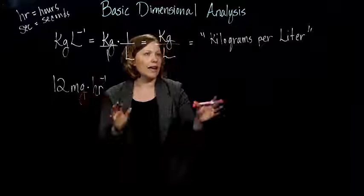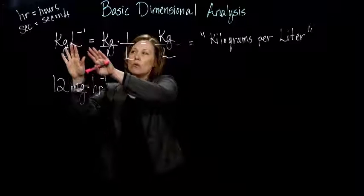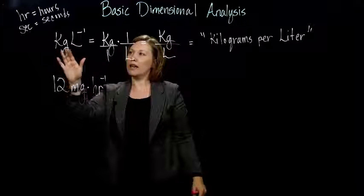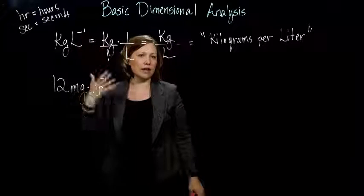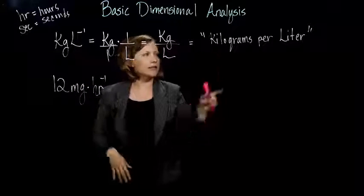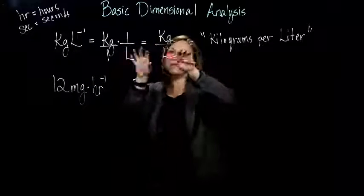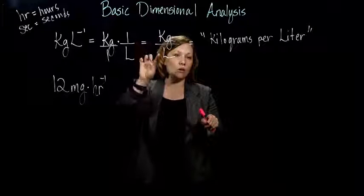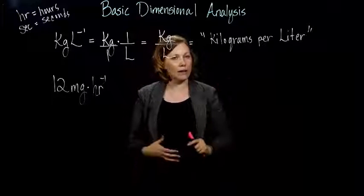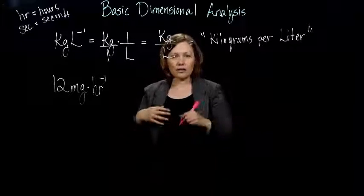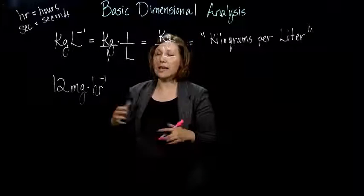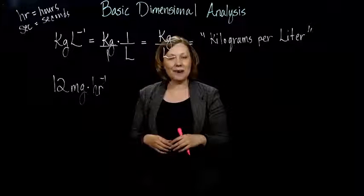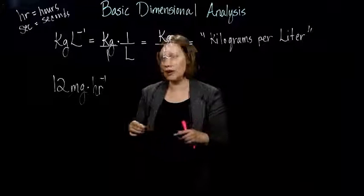So back to this example. So I want to rewrite this in a way that makes sense. When we were looking at this first example, kilograms times liters to the negative 1 doesn't really make a lot of sense. But if we rewrite it as kilograms over liters, we can think of it as kilograms per liter. So that's the kind of motivation for doing this, and it's also good practice when we actually get to doing dimensional analysis.